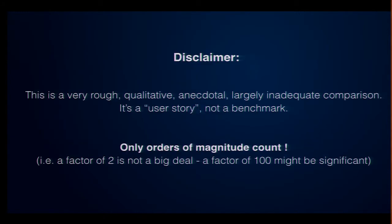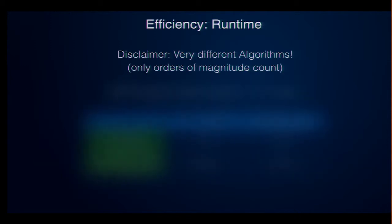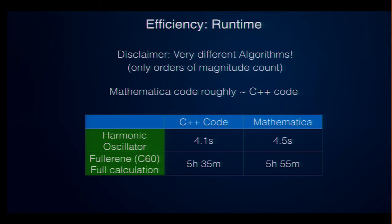So, I'd like to show you a simple comparison, but please let me show this disclaimer here. This is anecdotal evidence. It's not a benchmark I'm showing you. So, don't believe the numbers. Orders of magnitude are probably significant, but ignore factors of two. The first question people usually ask is, is it fast enough? What I show you here is two results for a very simple system where the C++ code came in at 4.1 seconds and Mathematica at 4.5. So, this is practically the same. For this fullerene calculation, C++ took five and a half hours, Mathematica five hours 55. So, this is also practically the same because it could be the other way around if you just tune a few parameters a bit differently.